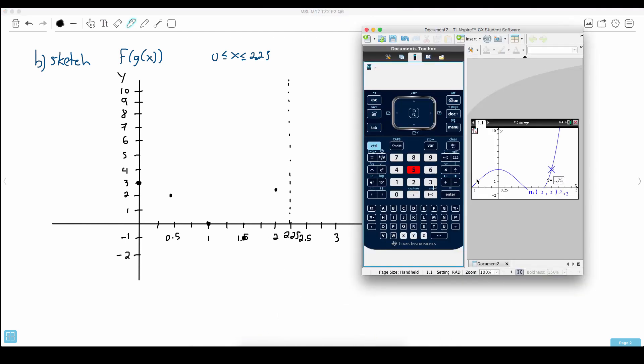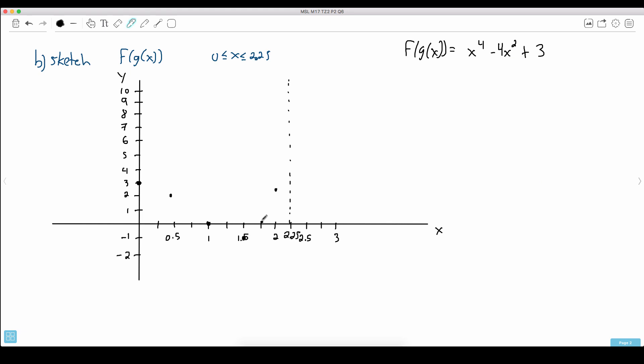Maybe we can find out at 1.75 what happens. Maybe that we need to know. Let's put it at 1.75. Oh it's at 0.129. Which means it's at just above there. So it's across there.